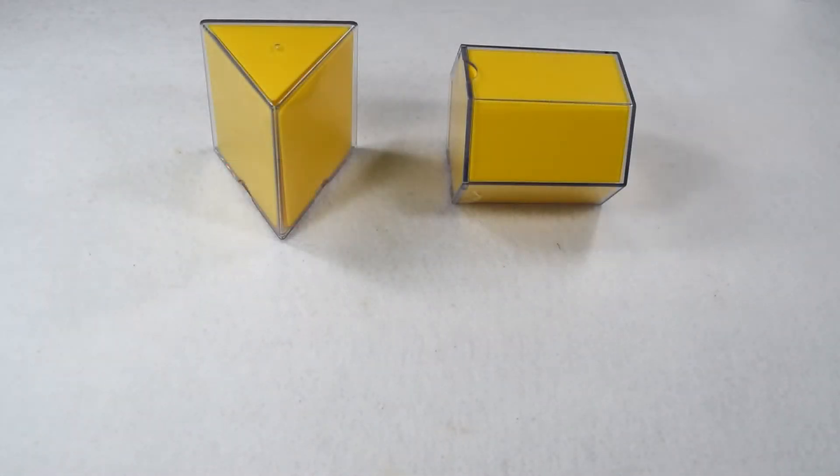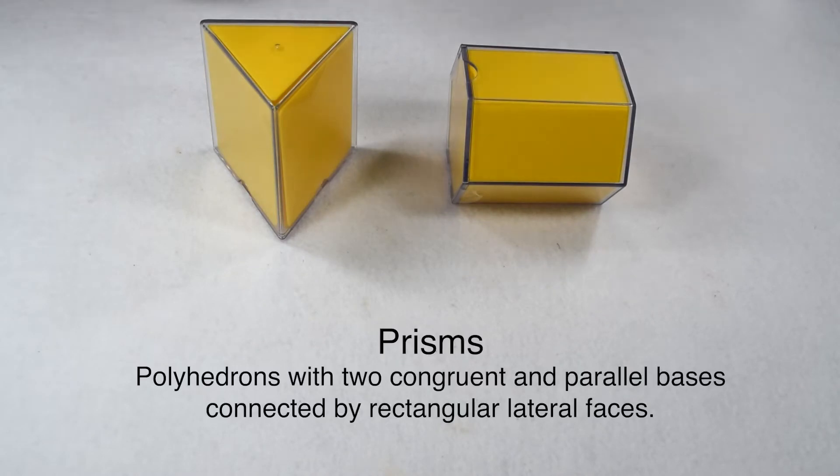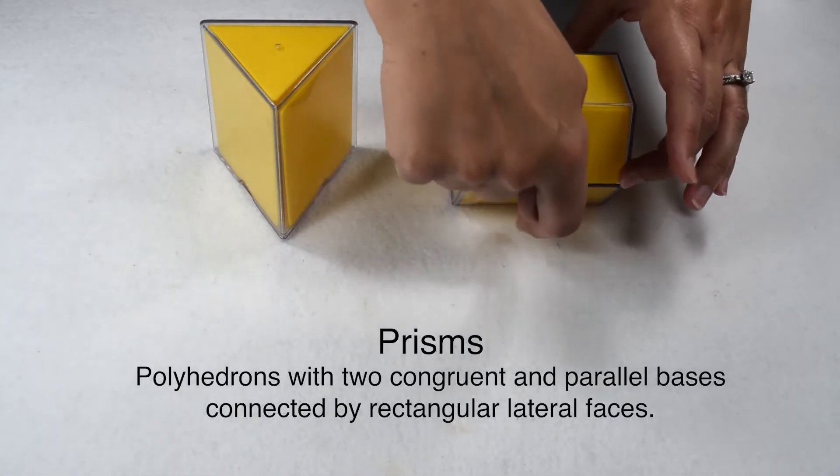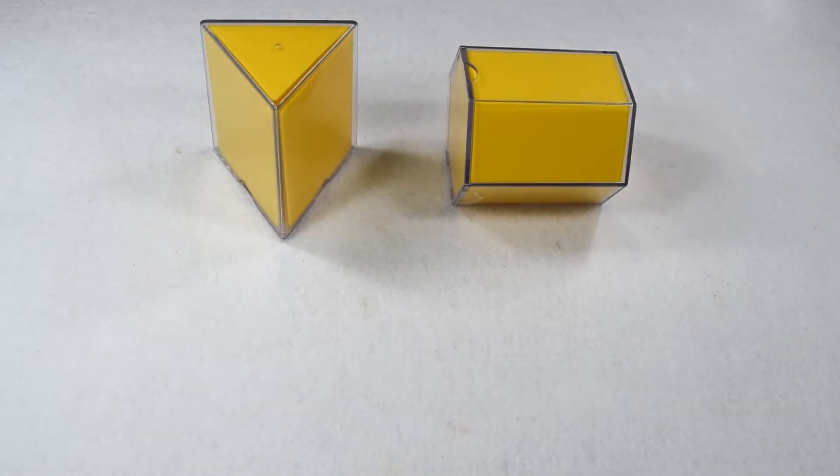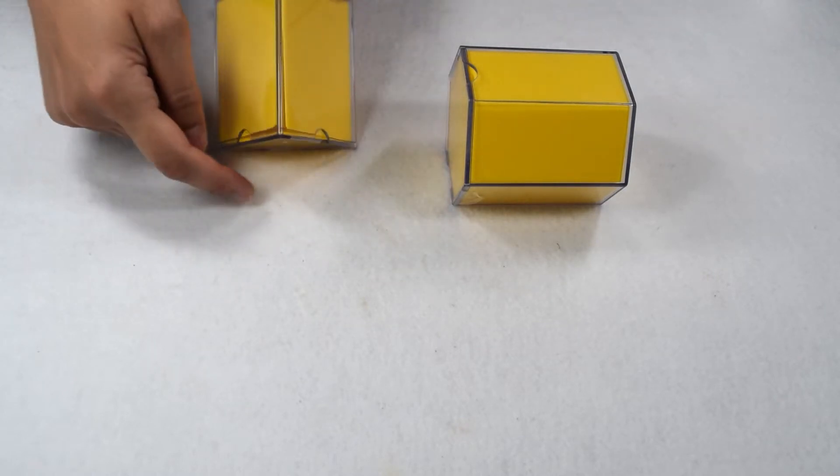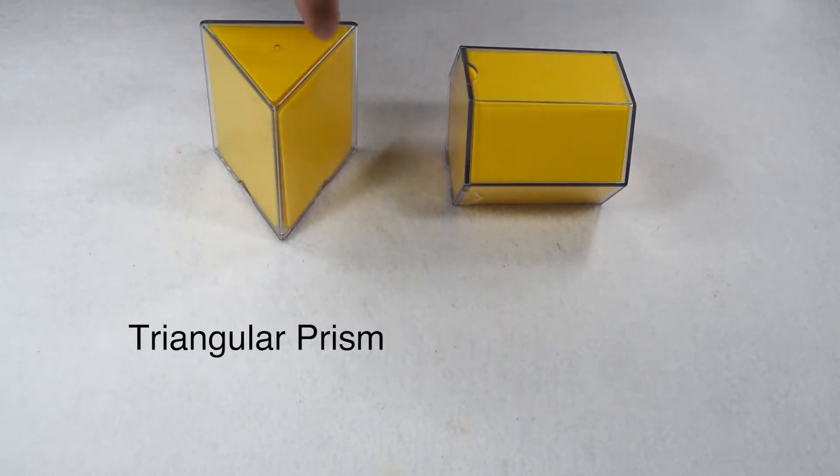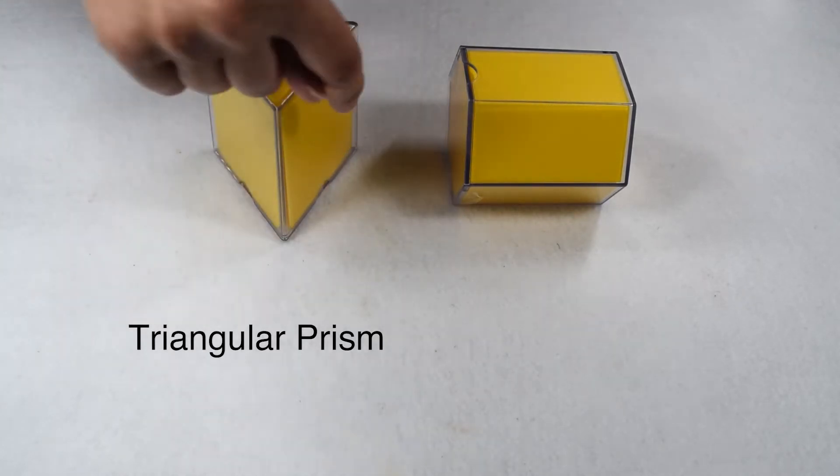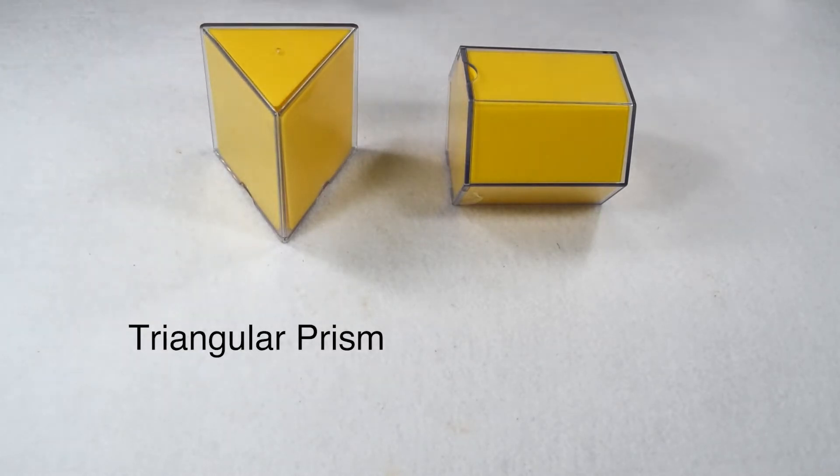Two types of polyhedrons we commonly use are prisms and pyramids. Prisms are polyhedrons with two congruent and parallel bases connected by rectangular lateral faces. Prisms are named by their bases followed by the word prism. This figure has two triangles that are parallel to each other. Three rectangles connect those triangles. That tells us that this is a triangular prism. Our triangles are our bases, and our rectangles are our lateral faces.